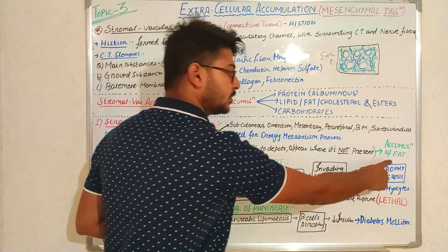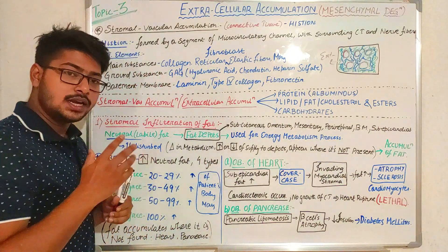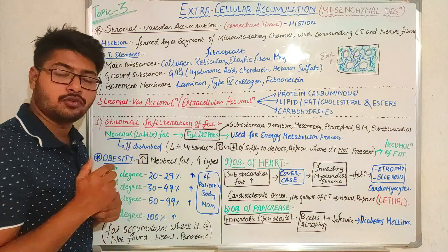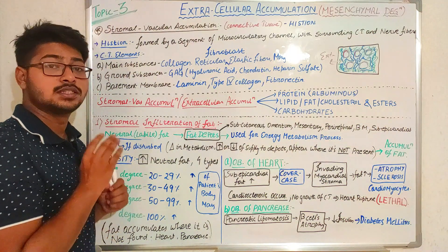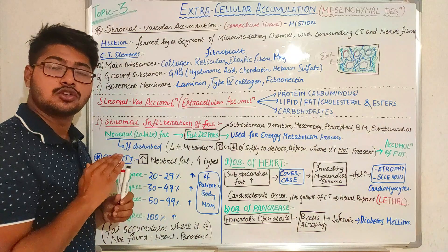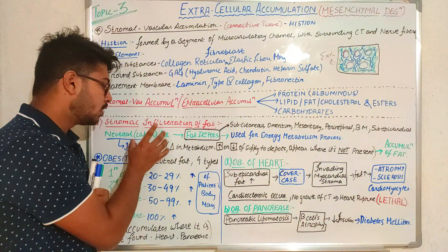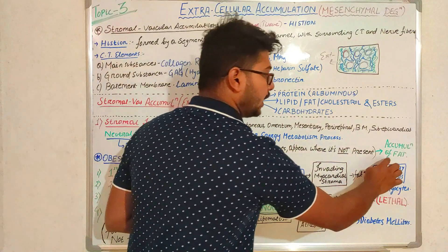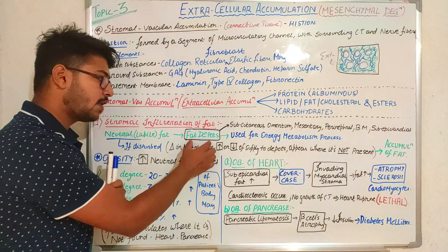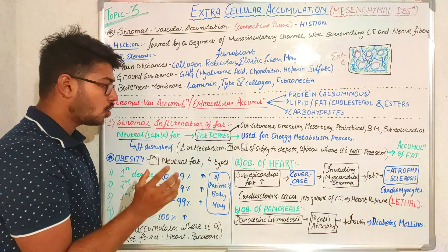If there is any kind of disturbance to the neutral fat, there will be accumulation of fat leading to certain types of cell injury. The types of disturbance include: changing metabolism of neutral fat, increase or decrease in supply of neutral fat to the fatty depots, and the appearance of fat where it is not normally present. These disturbances may cause accumulation of fat, leading to cell injury.